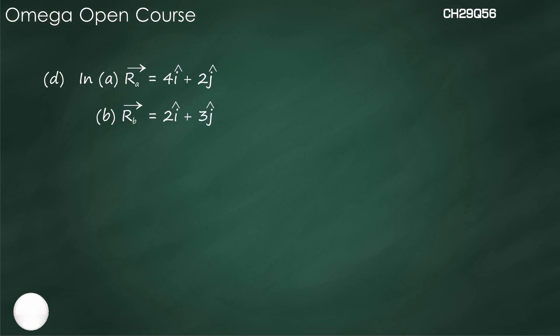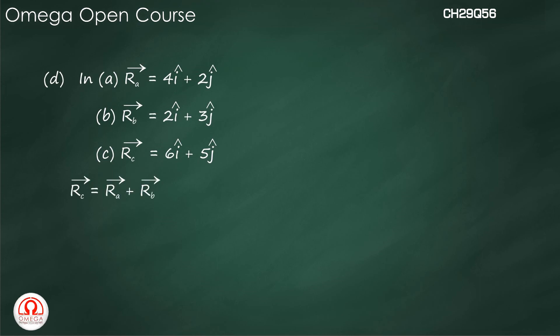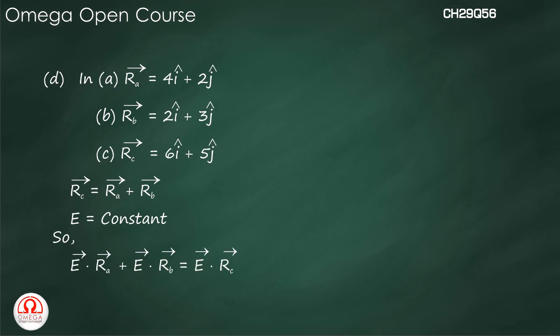Part d: The relation between the three parts. We can observe that minus E dot r_A + minus E dot r_B equals minus E dot r_C, which means the answer of part a plus the answer of part b equals the answer of part c: that is, (minus 80) + (minus 40) = minus 120. So Va + Vb = Vc. This is the relation between these three parts.